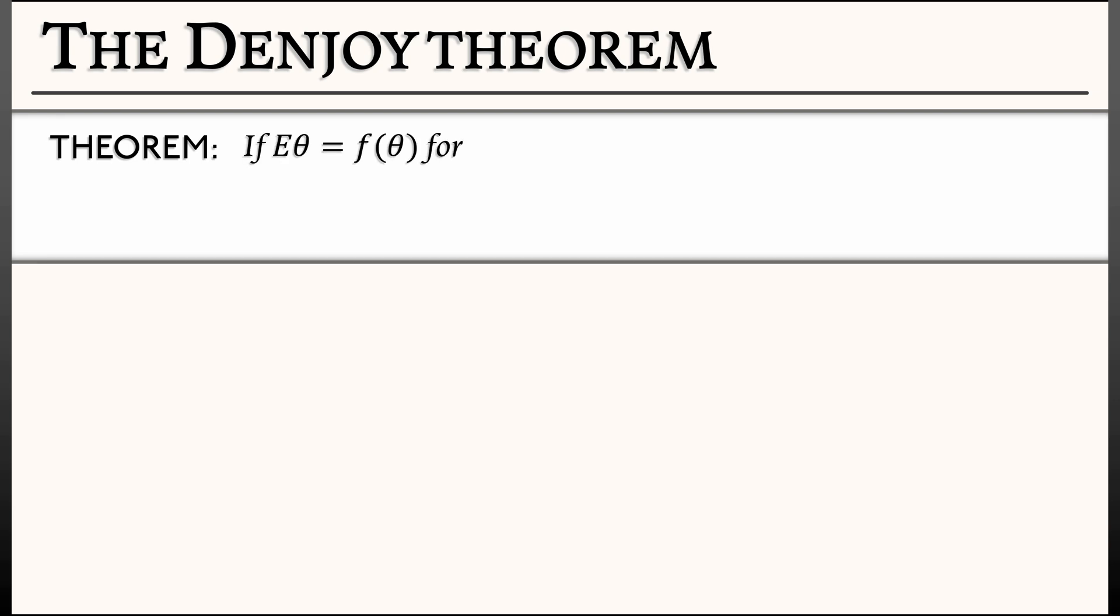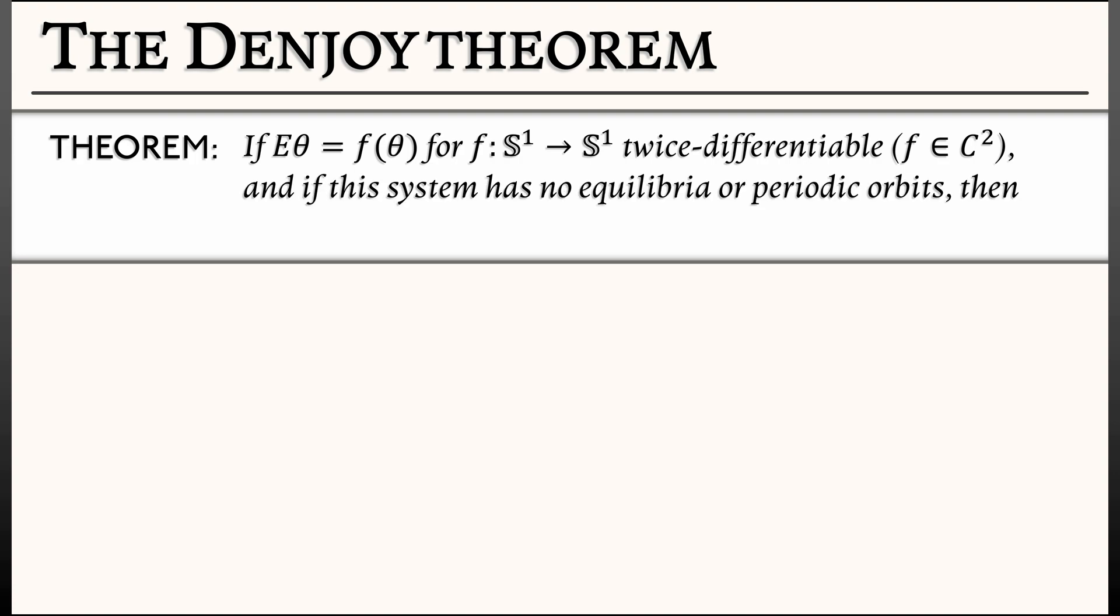something called the Denjoy theorem. The Denjoy theorem says the following: let's say you've got a dynamical system on the circle, Ė θ = f(θ), where f is a map of the circle to itself that is not only differentiable but twice differentiable, so the second derivative exists.